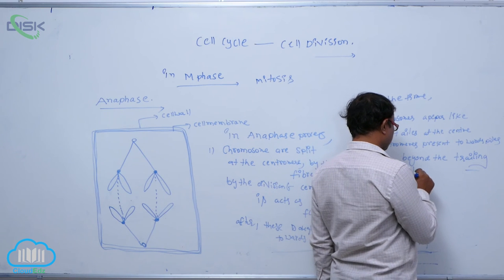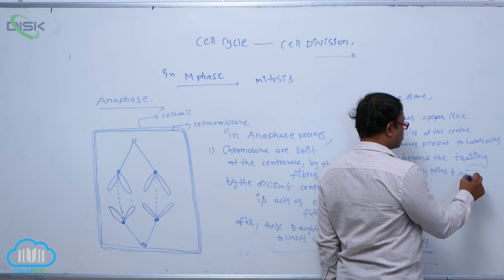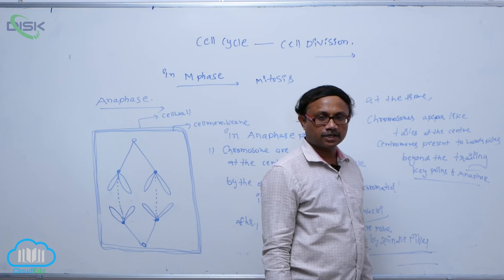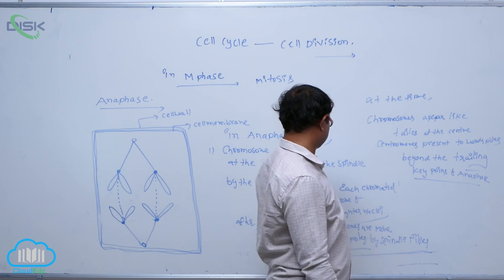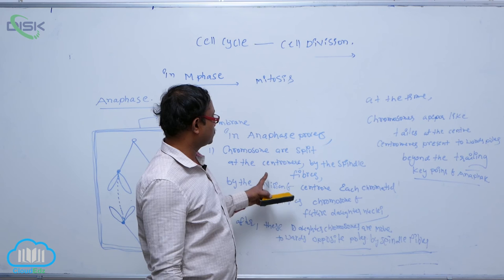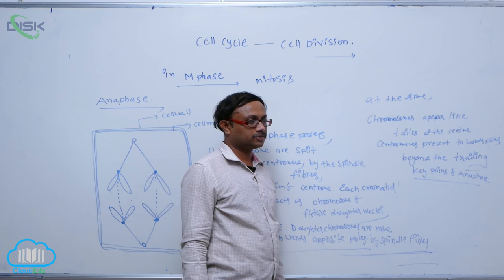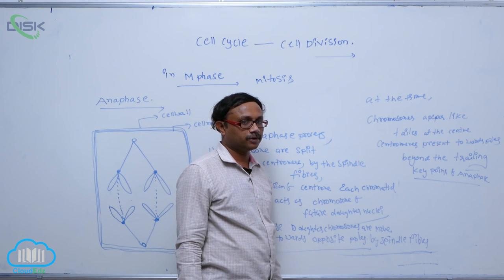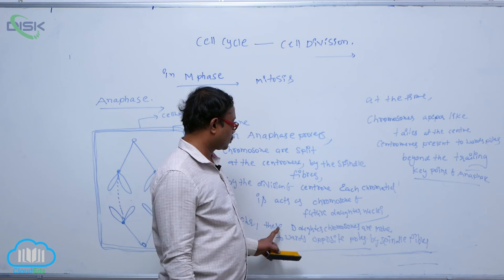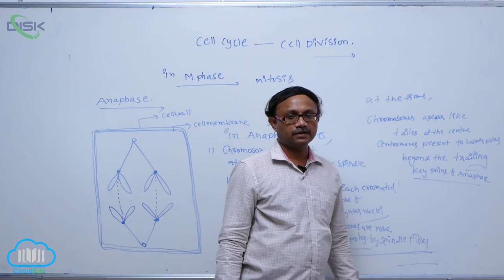The key points of anaphase are: first, chromosomes are split at the centromere by the spindle fibers. Second, the daughter chromosomes move towards the opposite poles by the spindle fibers. These are the two key points of anaphase.